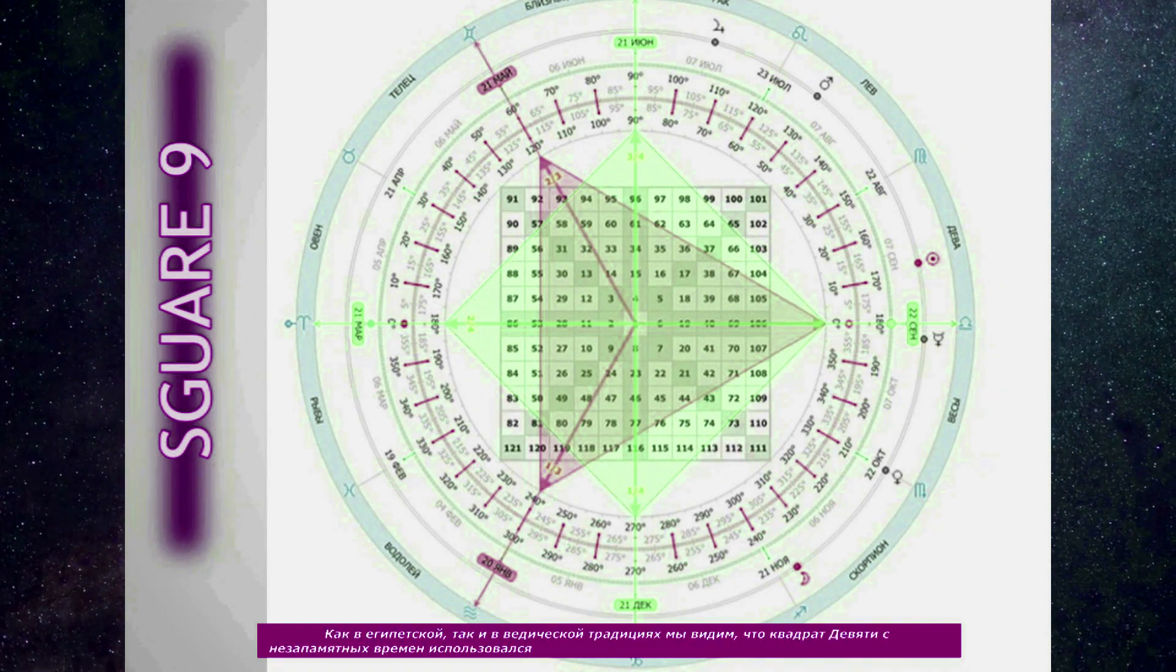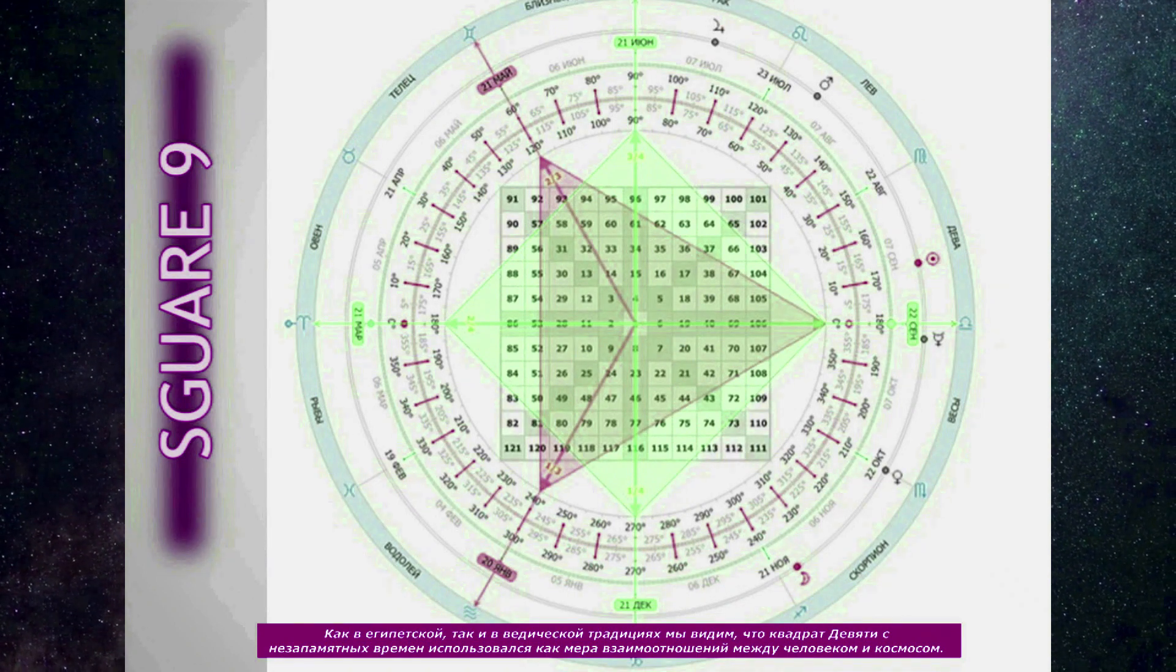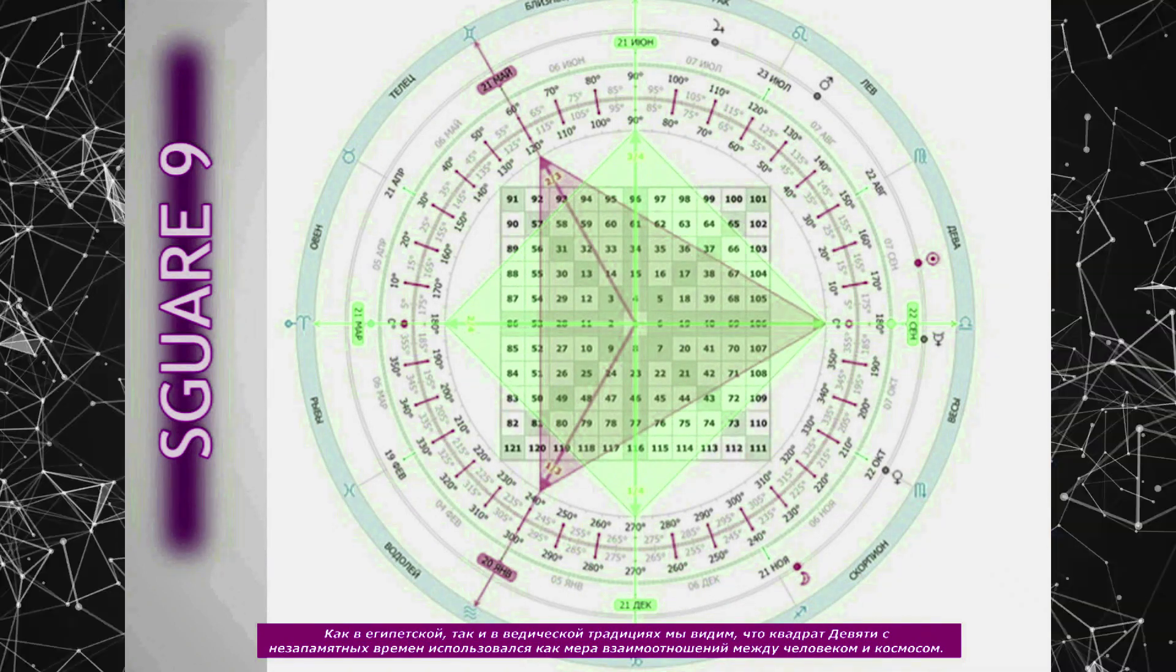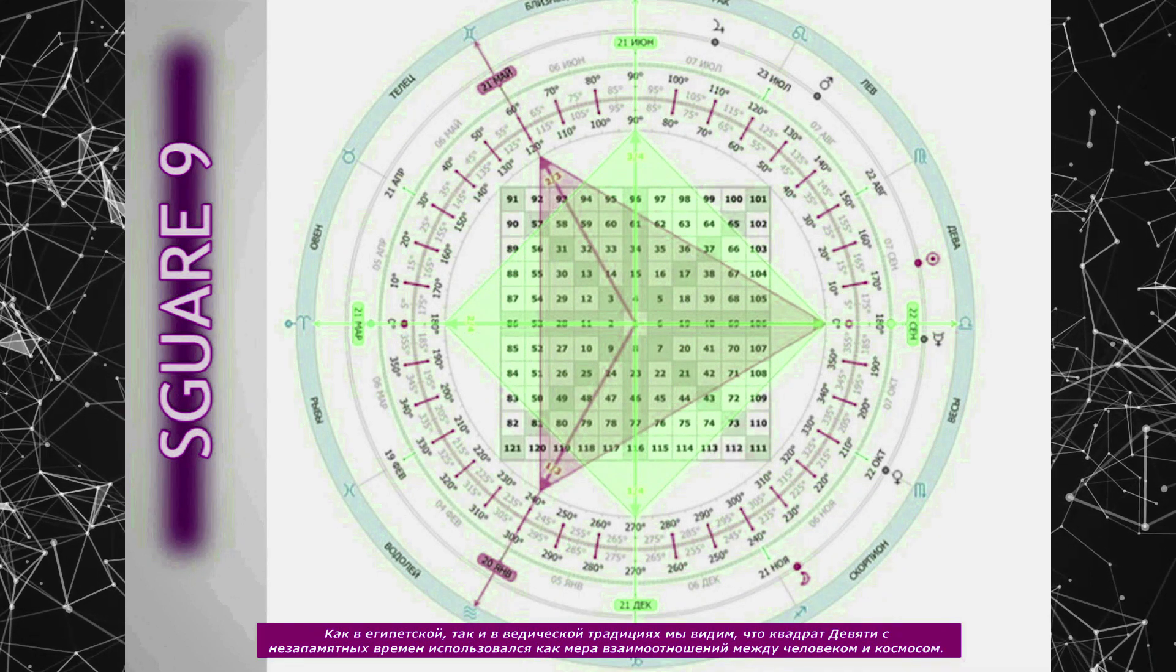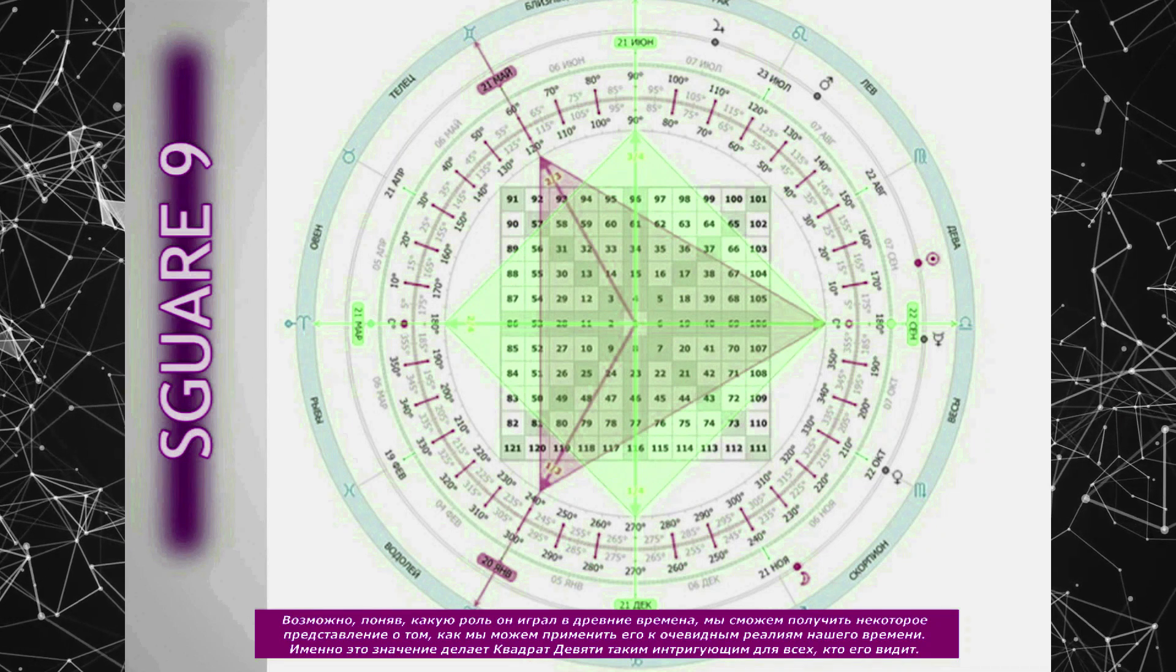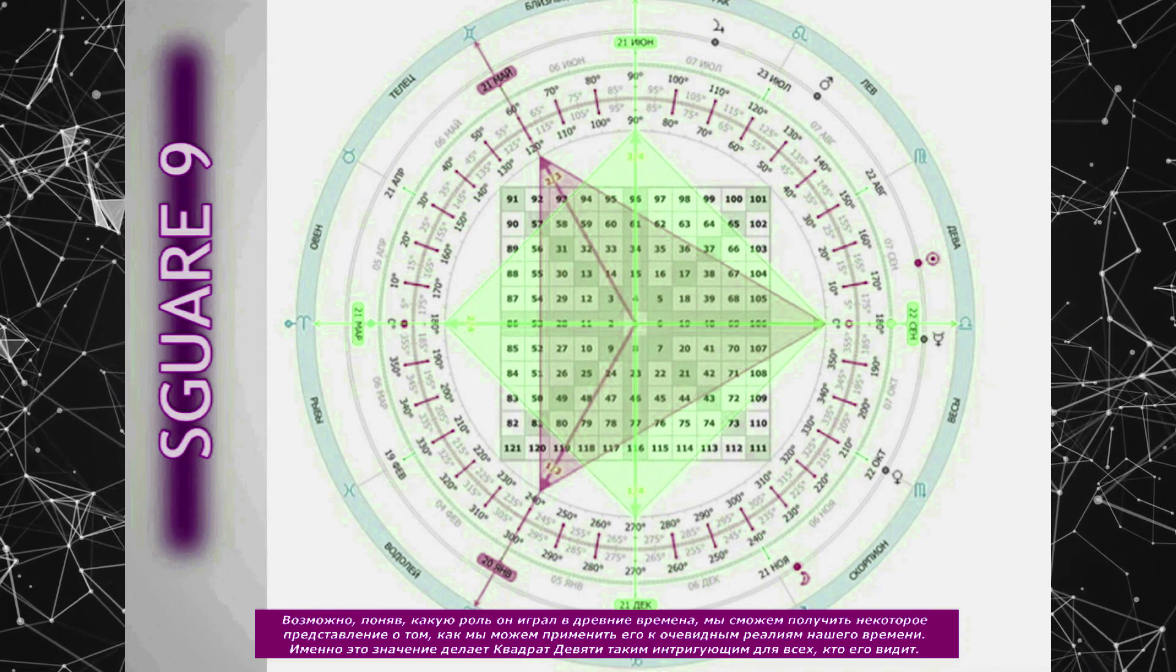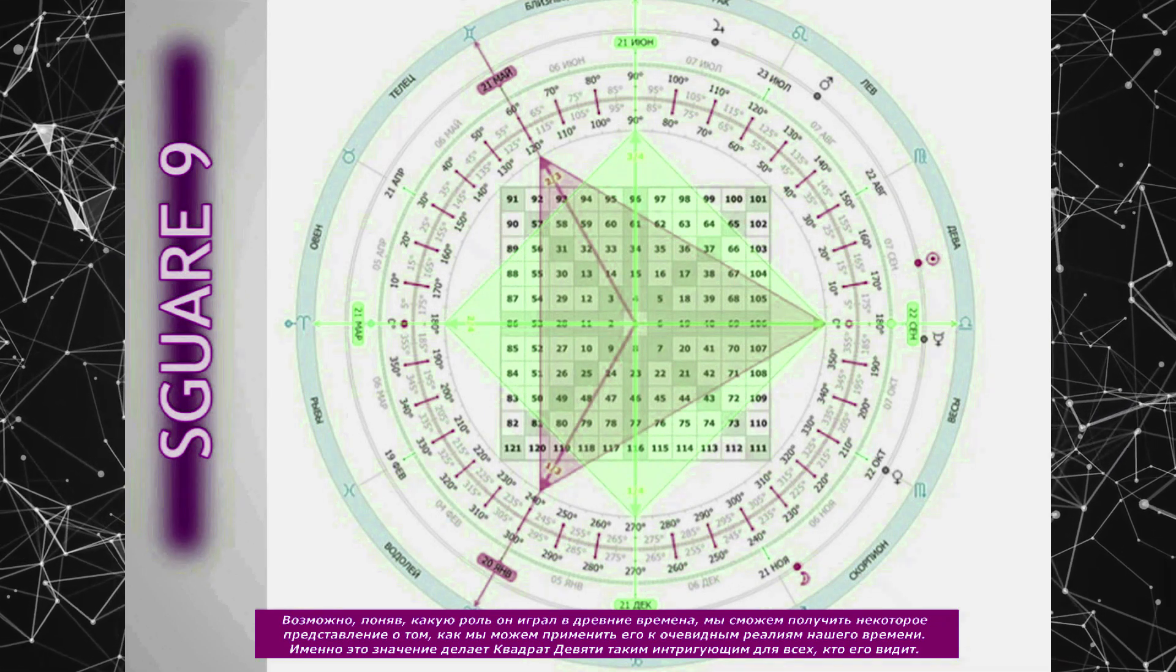We see in both the Egyptian and Vedic traditions that the Square of 9 has, since the beginning of time, been used as a measure of the relationship between man and cosmos. Perhaps by understanding the role it played in ancient times we may derive some insight into how we may apply it to the manifest realities of our time.